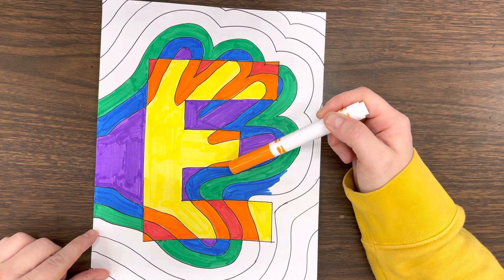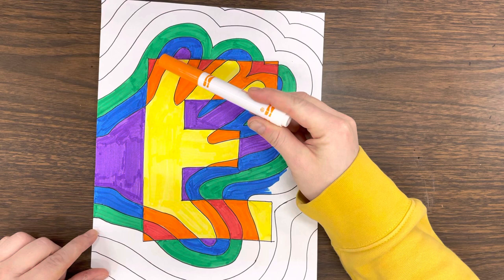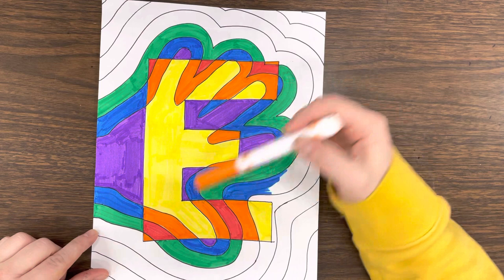Now I have taken orange, and I am going right outside of every section that is yellow, as you can see. That's all the way around. So everything touching yellow inside of my letter E, I made orange.